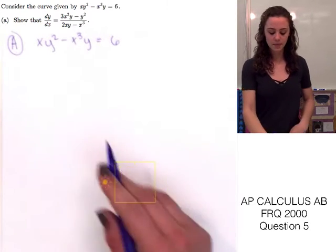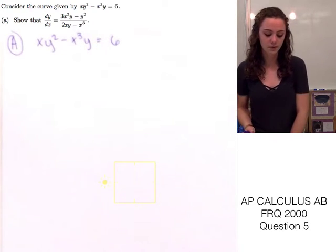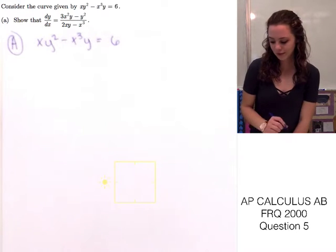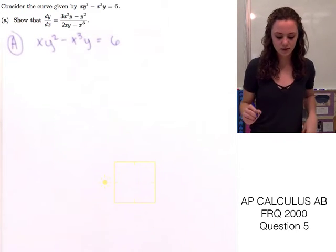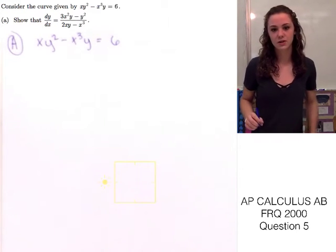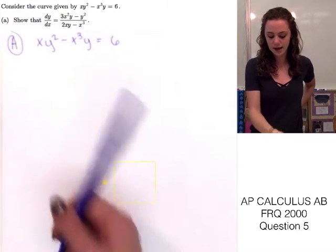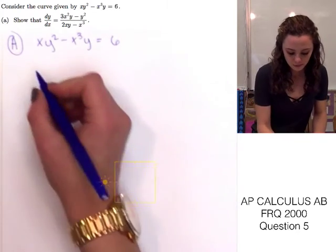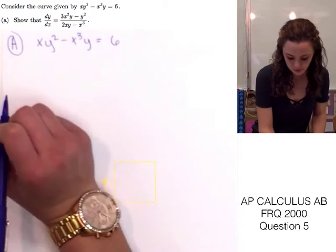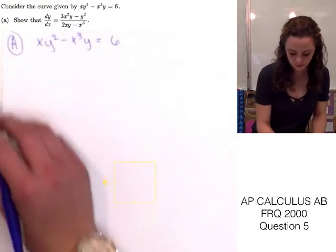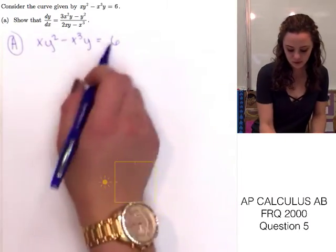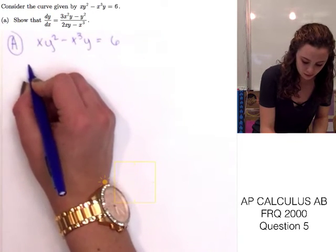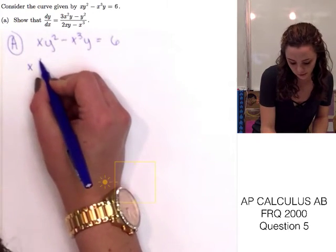I started out by writing the original equation. We're going to have to use implicit differentiation to solve this since there's a y mixed in with x. First we're going to have to use the product rule to find the derivative of the left side, so I'm going to write out what we need to differentiate.